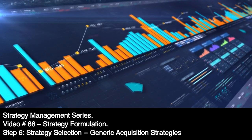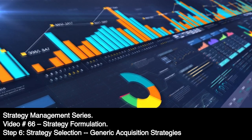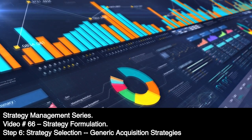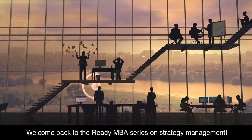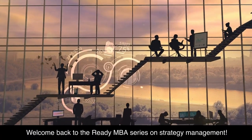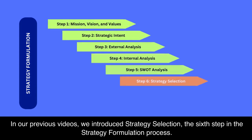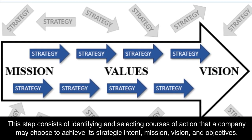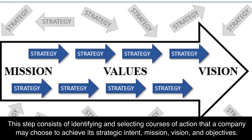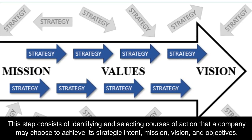Strategy management series, video number 66: strategy formulation step 6, strategy selection — generic acquisition strategies. Welcome back to the Ready MBA series on strategy management. In our previous videos, we introduced strategy selection, the sixth step in the strategy formulation process. This step consists of identifying and selecting courses of action that a company may choose to achieve its strategic intent, mission, vision, and objectives.